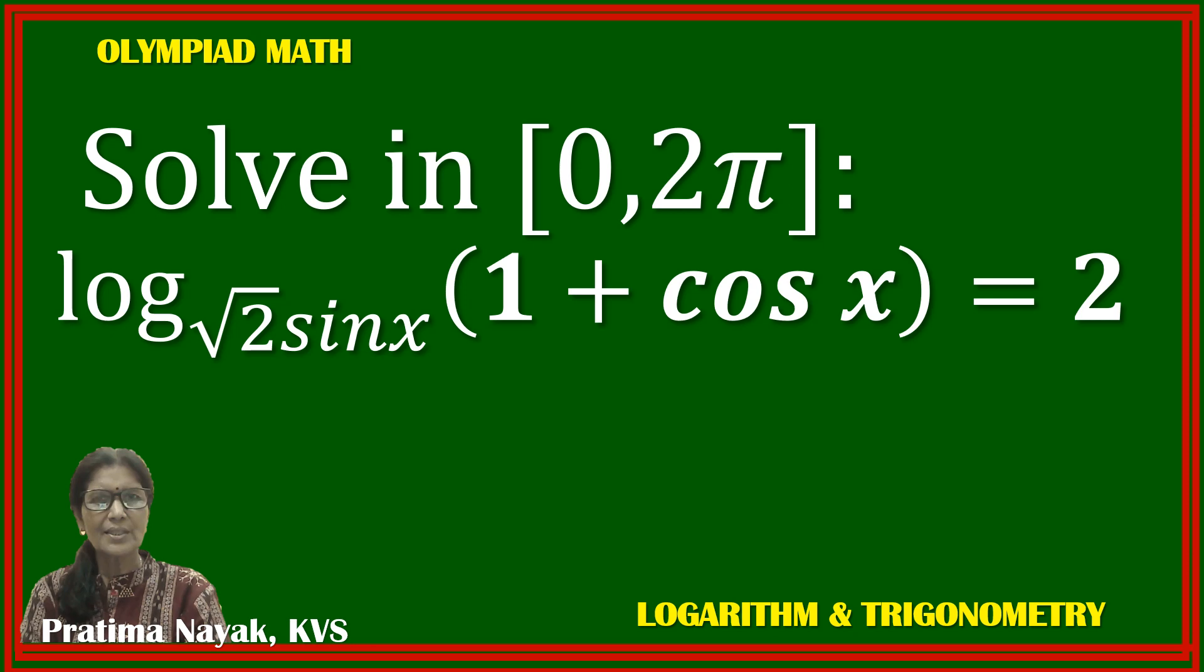The question is to solve in the period 0 to 2π, both are included. Logarithm of 1 plus cos x, base square root 2 times sin x, is equal to 2.